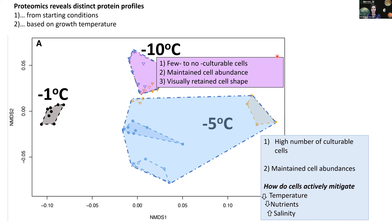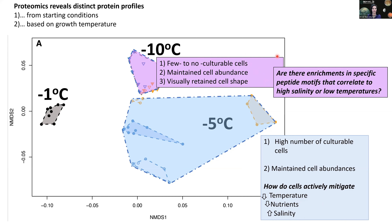The next area we're interested in is whether there are enrichments in specific peptide motifs between three and four amino acids. We'll walk through exactly what we did with this dataset to examine how potentially these small motifs can be retained for long periods of time and what that might mean for life detection.